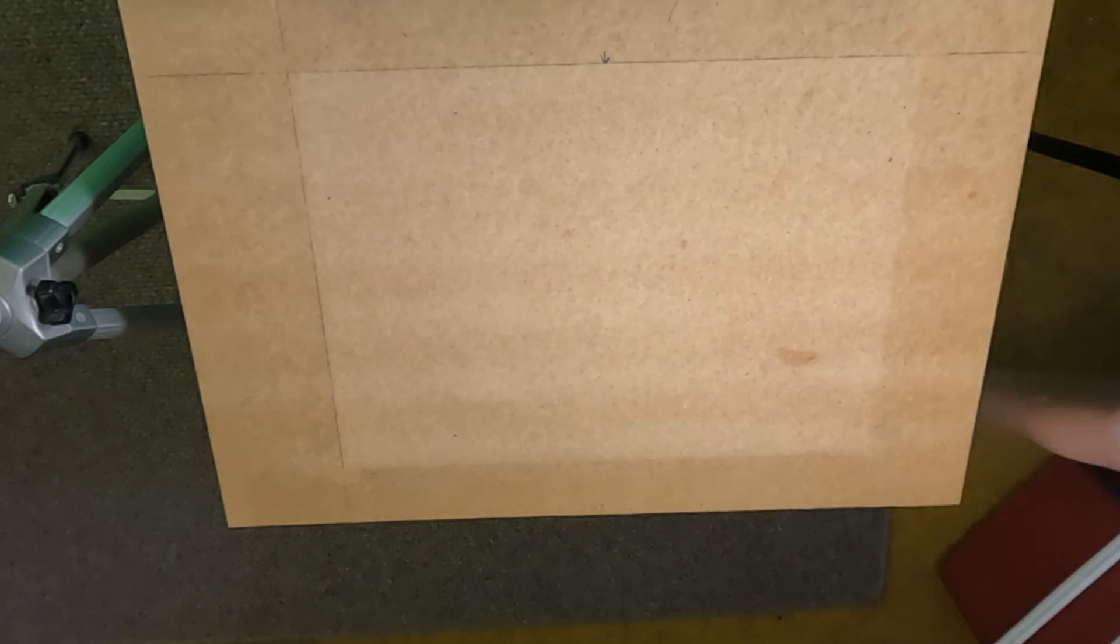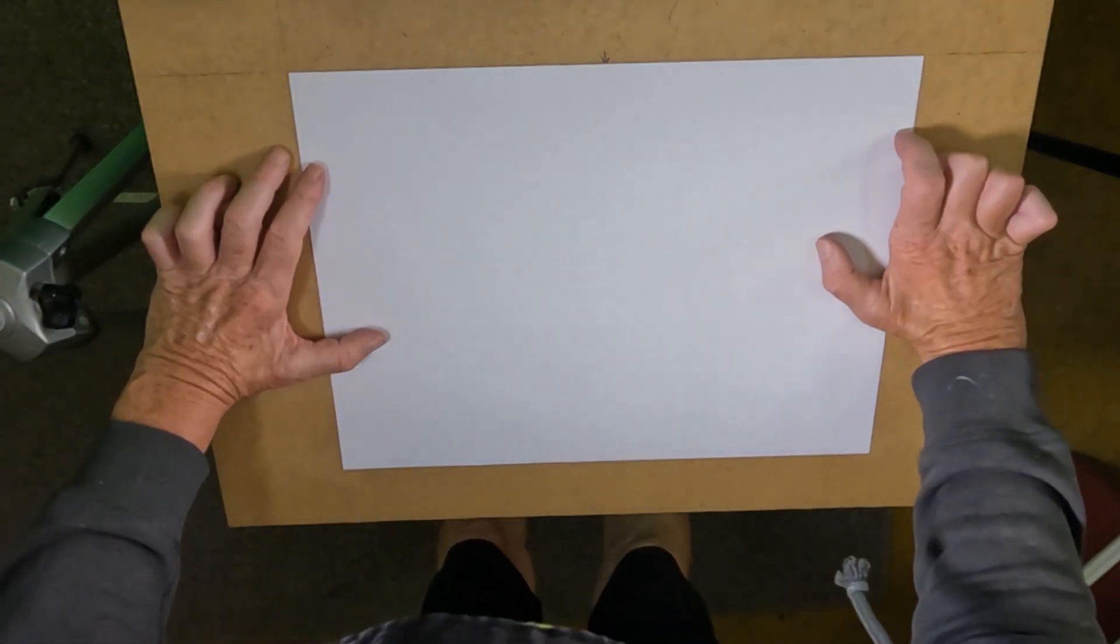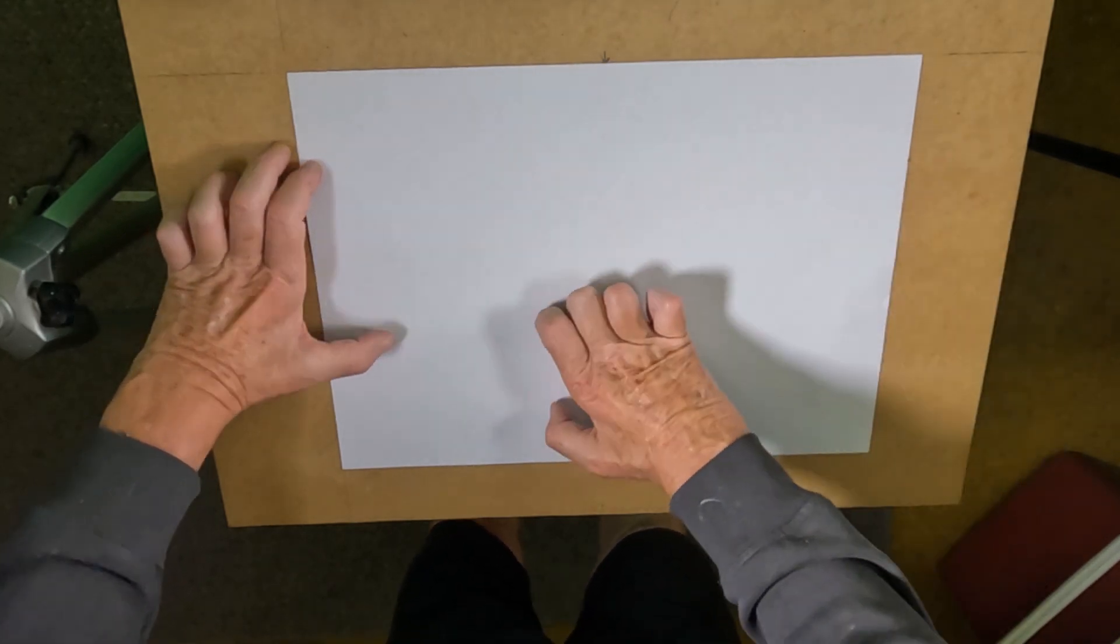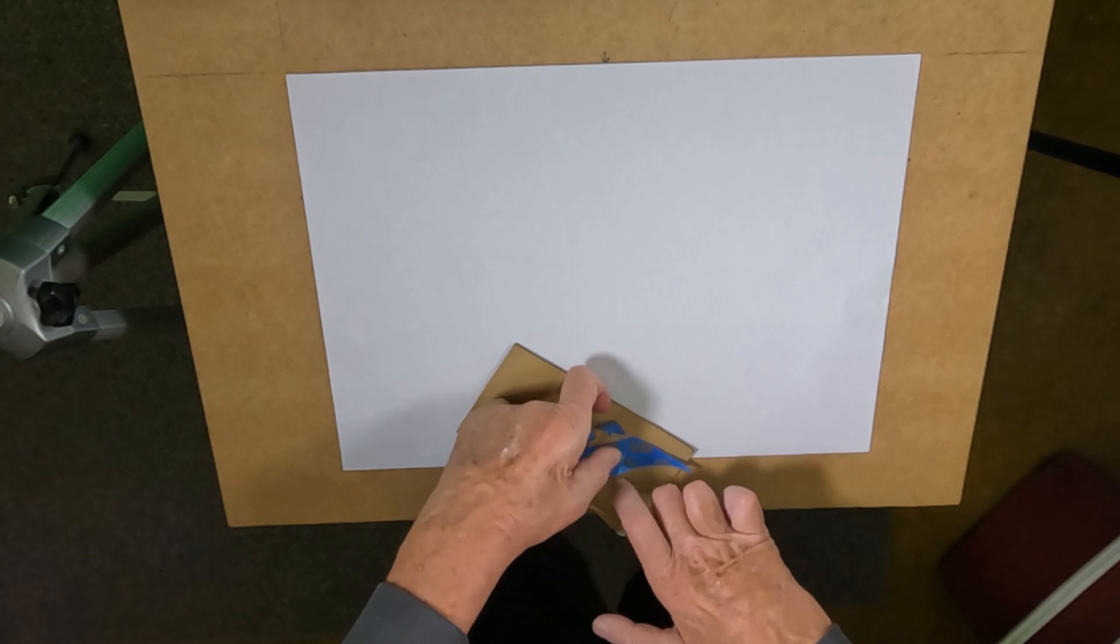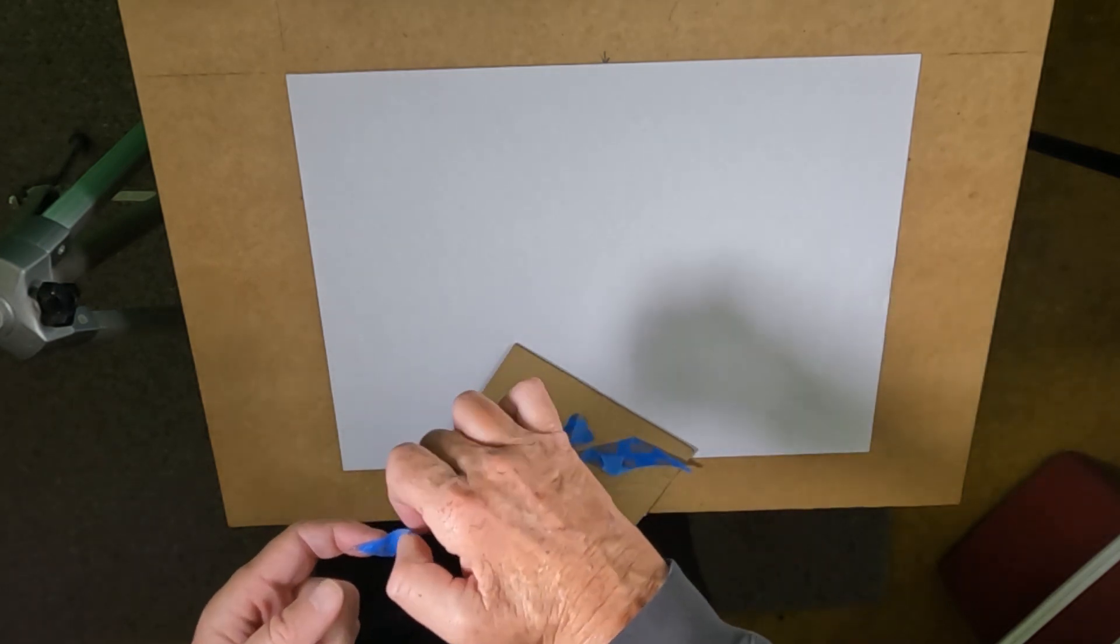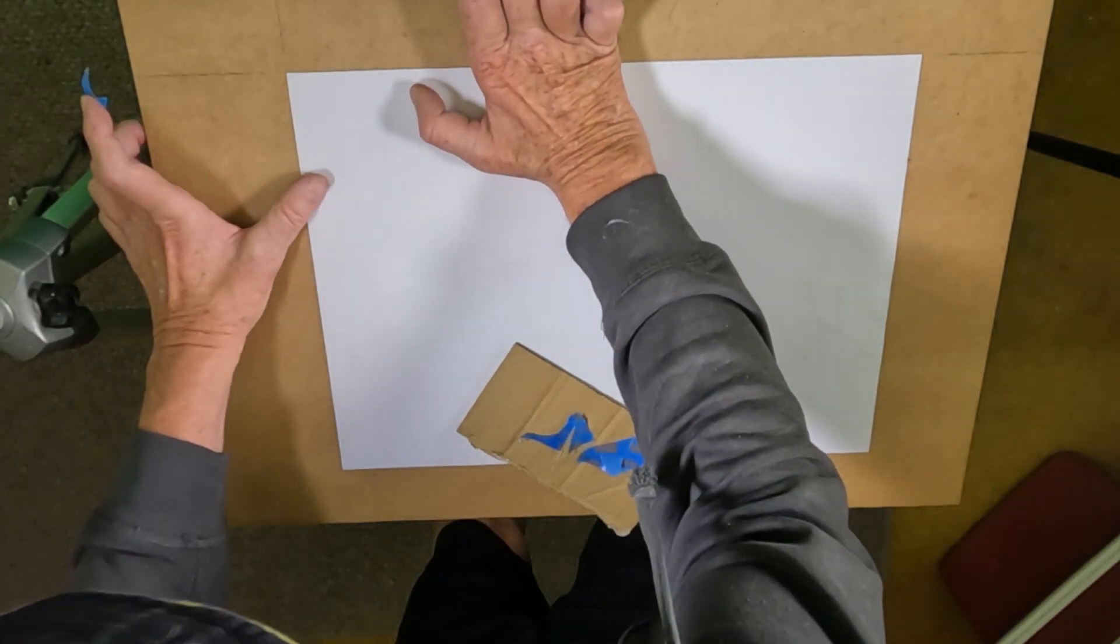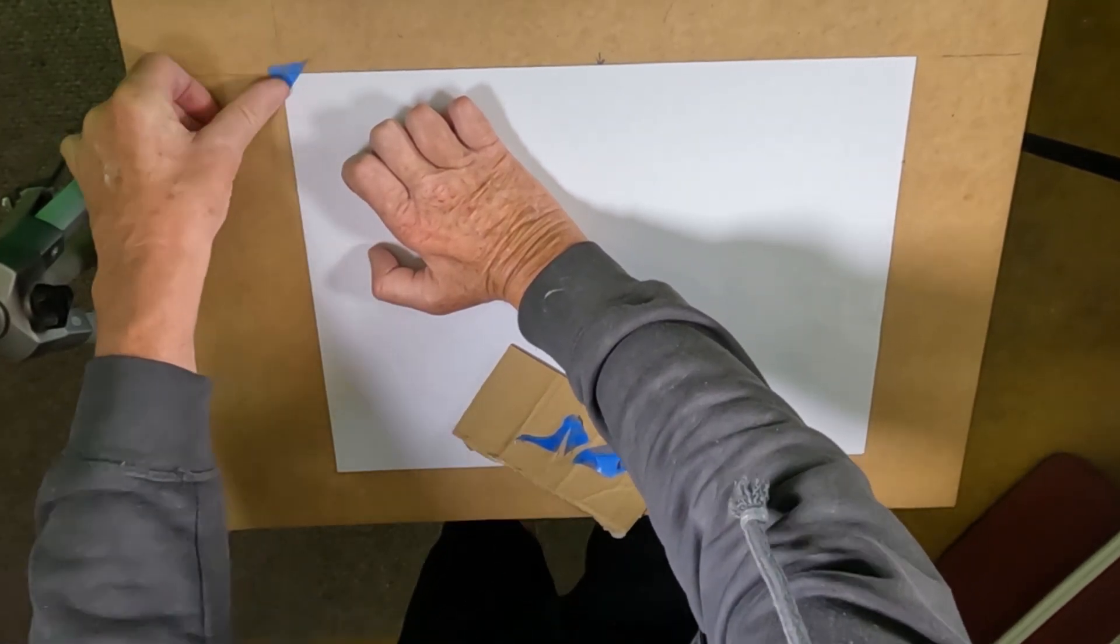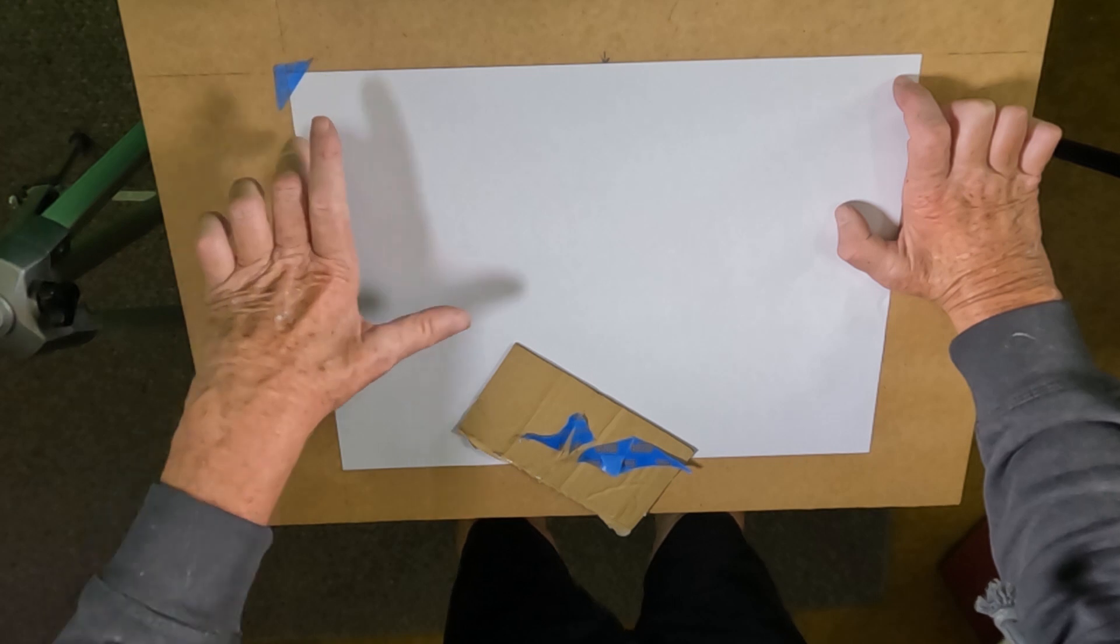So the first thing we've got to do is to get our piece of paper and secure it on the board. Masking tape is very good. Painters masking tape is designed to come off. So I've just got a little bit of this masking tape here and I've just cut it in little corners like that. So I'm just going to put that corner there first.